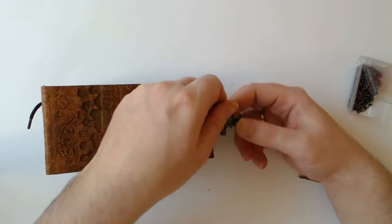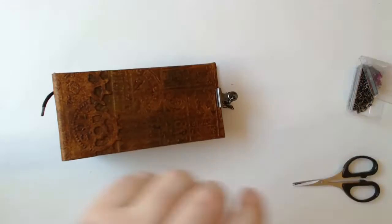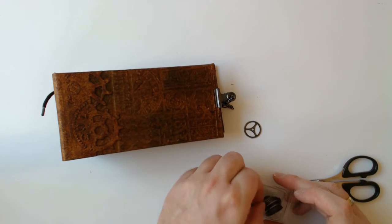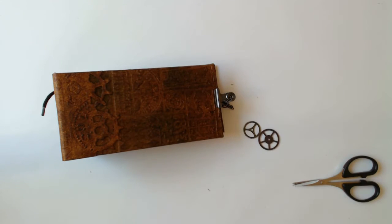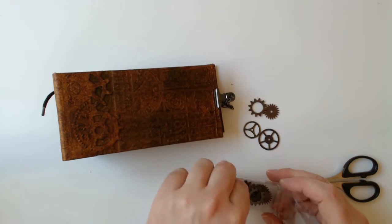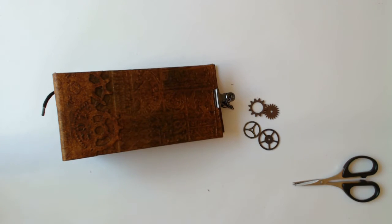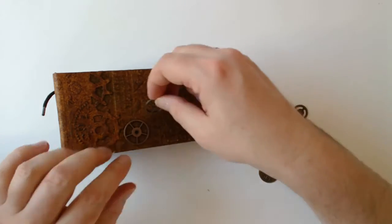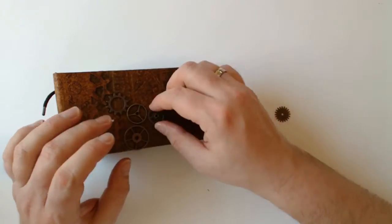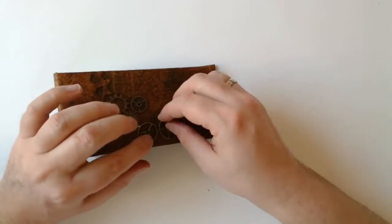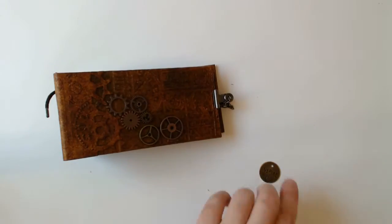The clip will now be clipped onto the side and thereby closes the album. I got a lot of requests to do a steampunk album. And so I will use the opportunity to embellish the album in the steampunk style. I'm using some gears and buttons which I'm adhering onto the cover by using the liquid glue again.